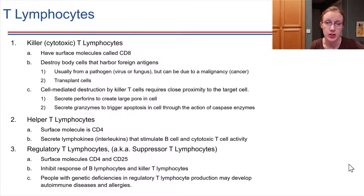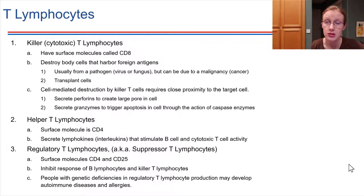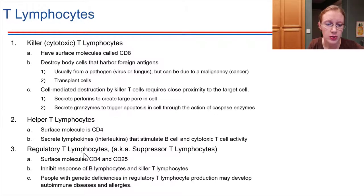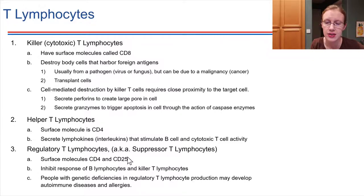There is some indication that having deficiencies in regulatory T lymphocytes can actually lead to the development of allergies and autoimmune conditions. These cells are important for keeping all the other players regulated and not overreacting. All these T lymphocytes have special surface molecules, and those surface molecules are what allow binding and recognition to happen, which ultimately is what activates these cells.